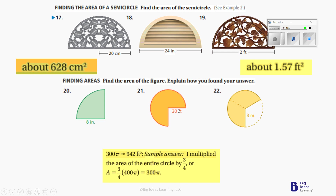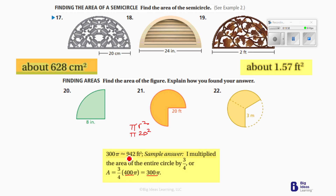We know that 20 is the radius. The formula we're using is pi r squared. If r is 20, this is 20 squared times pi — that's 20 times 20, which gives us 400. 400 times 3 fourths gives us 300. So that's 300 pi. And 300 times pi gives us 942 feet squared.